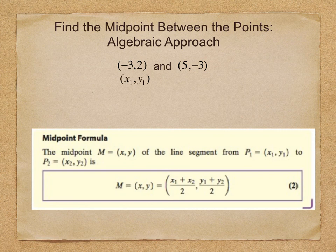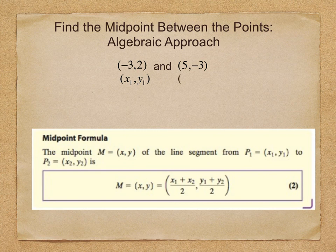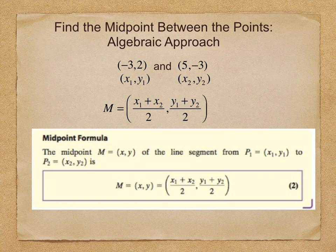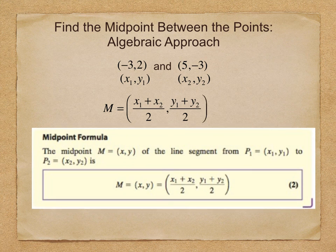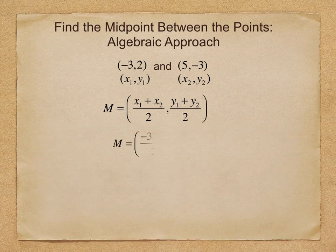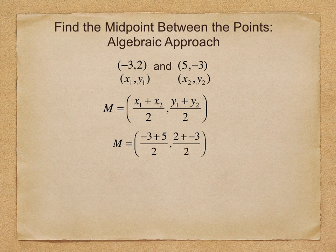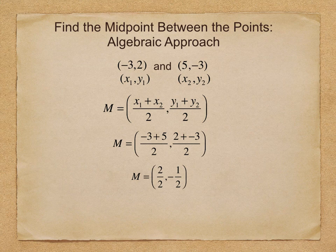So once again, we'll label these points x₁, y₁ and x₂, y₂. The formula that your e-book gives is right here. Now we'll substitute in the values for each of these variables. We'll simplify inside the parentheses, and so the coordinates of the midpoint are (1, -0.5).